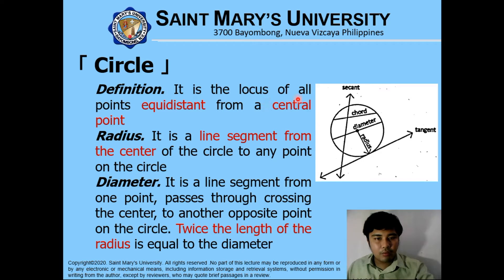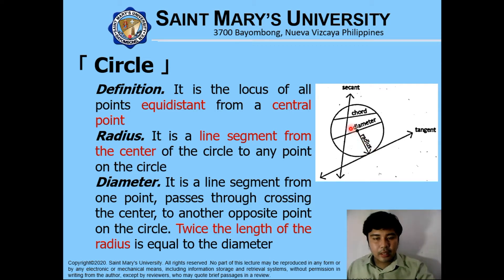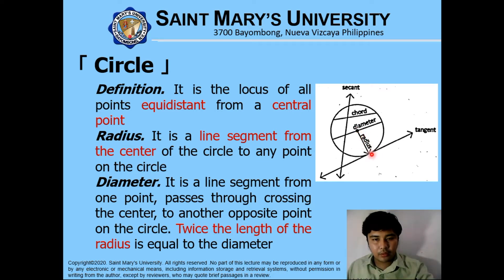A circle is a locus of all points — when we say locus, it is a set of all points — equidistant from a central point. As you can see in the figure, a circle is defined as the set of points that have equal distance from a central point. The radius is a line segment from the center of the circle to any point on the circle.